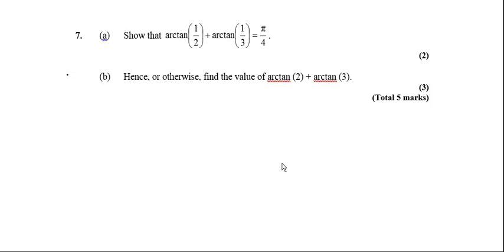So next to look at some equations using trig identities. Here's the first one: arctan(1/2) plus arctan(1/3) equals π/4. It's a little bit tricky unless you've seen this method before.